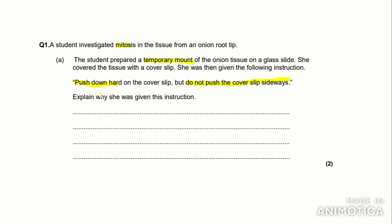As this is an explain question, you need to explain why something has been said or why something is happening. Now actually if you think about it, you need to push down hard because you need to make the specimen thin so that the light beam can penetrate the specimen so that an image can be seen. So I've wrote here, pushing down squashes the specimen so makes it thin. But she was given the instruction do not push the cover slip sideways as this could break open the chromosomes so that you will not be able to see mitosis, as mitosis is observable through the behavior of chromosomes. So I've written here, not pushing the cover slip sideways ensures the chromosomes are not broken open.